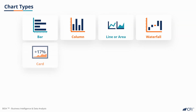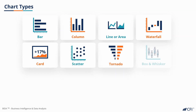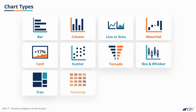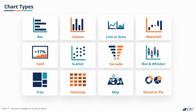Card visuals, scatter charts, tornadoes, and box and whisker charts all serve more specific roles such as highlighting key figures or comparing two variables. Finally, tree maps, heat maps, maps, and pie charts allow us to see how values look when broken down into more granular areas or groups.